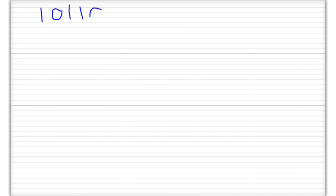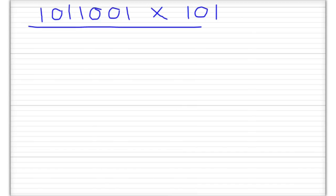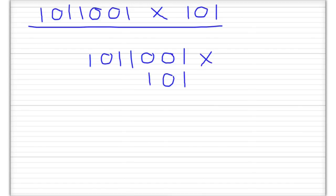So to start with, we want to multiply 1, 0, 1, 1, 0, 0, 1 by 1, 0, 1. To multiply those two numbers we need to write it like this: 1, 0, 1, 1, 0, 0, 1 with 1, 0, 1 underneath. It might also help to just put zeros under here. That's a 7-bit binary number.